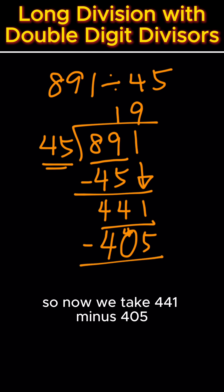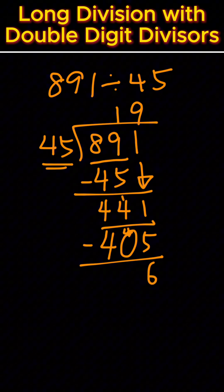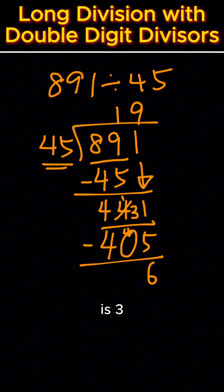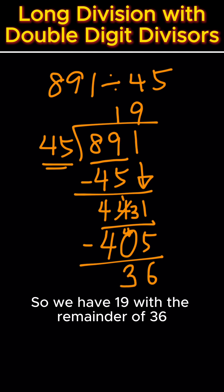So now we take 441 minus 405. 11 minus 5 equals 6. Then this becomes 3. 3 minus 0 is 3. So we have 19 with a remainder of 36.